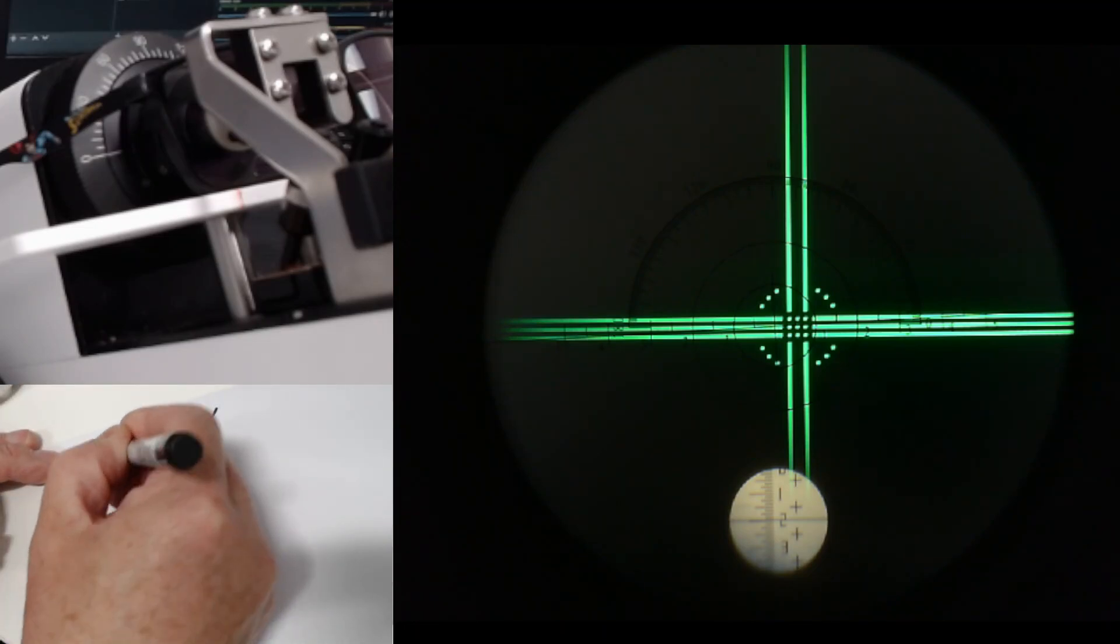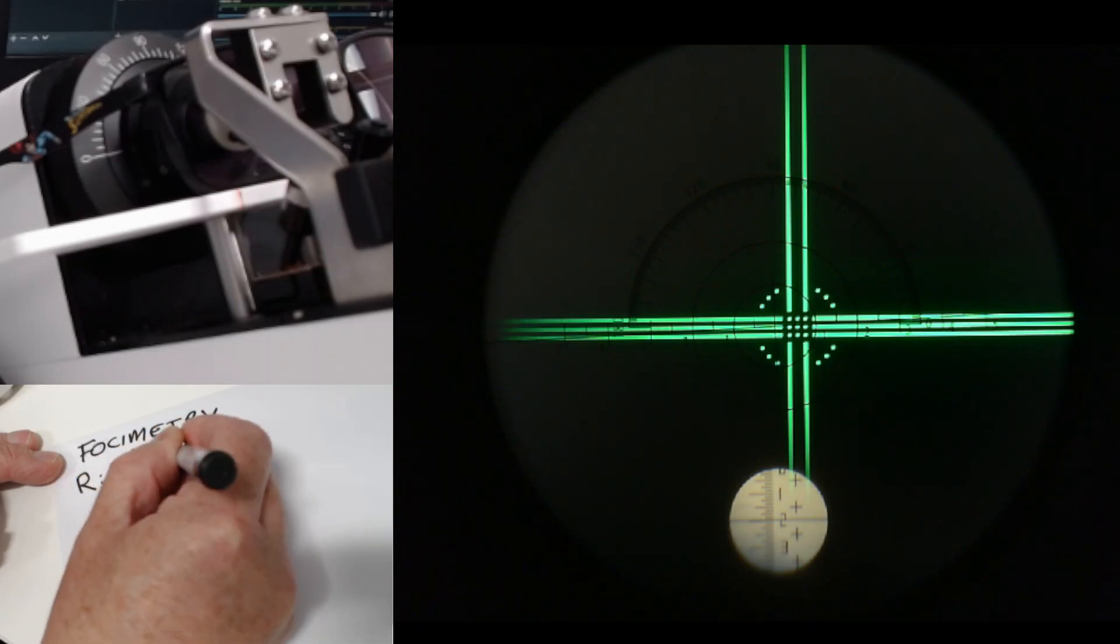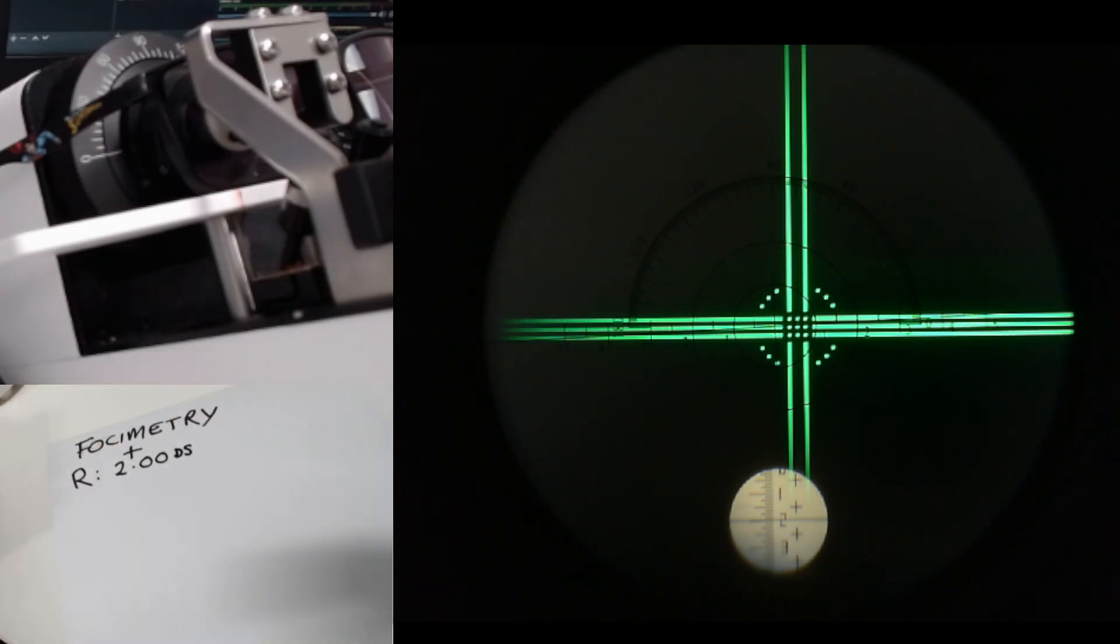I think we can agree that that's pretty much spot on plus two sphere. I'm going to write on my sheet here, right eye plus 2.00 sphere. Remember that every power that you write has to have a sign and two decimal places. Anything other than that is going to be wrong and will be marked wrong.